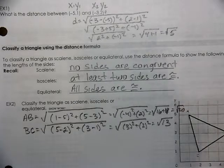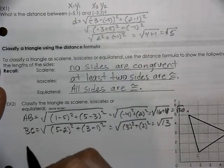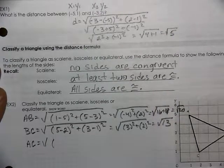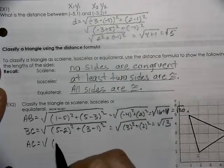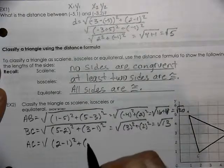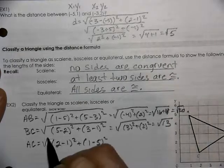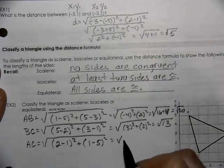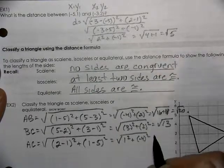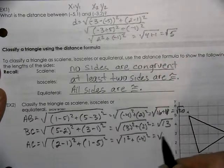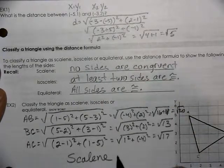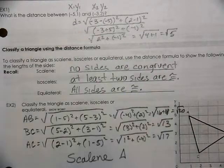It's possible that this is isosceles, so we'll look at AC. With AC, the x value is 2 minus 1 quantity squared, the y values are 1 minus 5 quantity squared. So we get 16 plus 1, the square root of 17. So we have a scalene triangle because no sides are congruent.